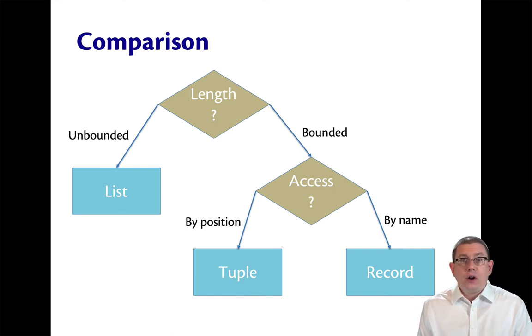Whereas a record you access by name. You give fields names, and you get to pull out a part of the record based on that field name. In our example of Camels, that was Humps or Riders.